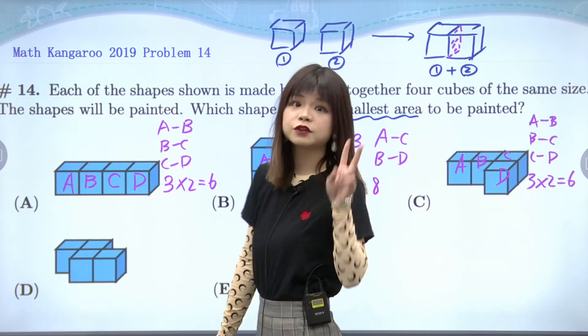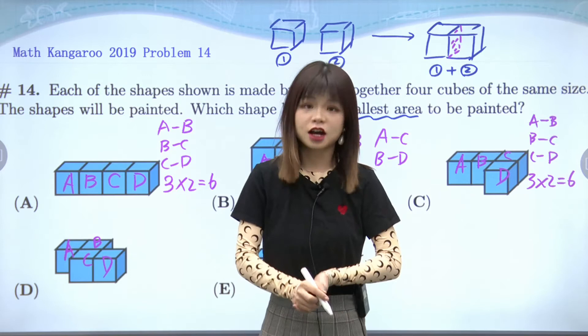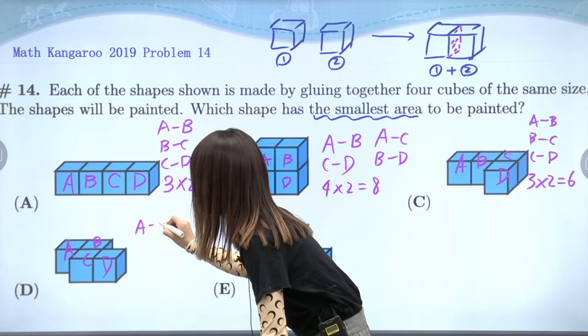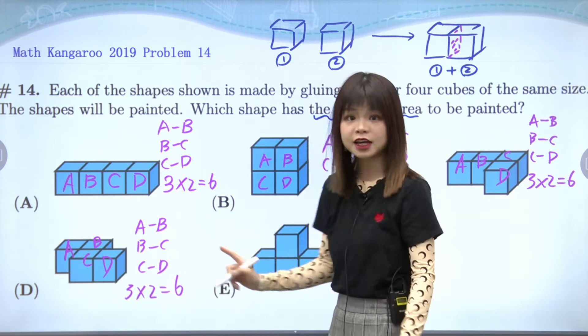We still have two more choices. For choice D, we have cubes A, B, C, and D. Can you try it yourself to see how many hidden faces we have? We have six — A and B, B and C, and C and D. So in total, three times two equals six hidden faces.